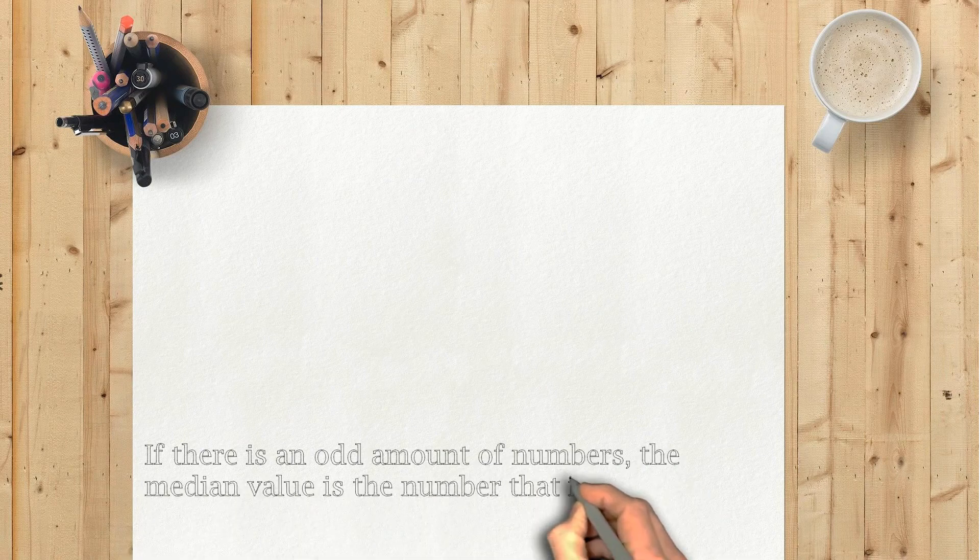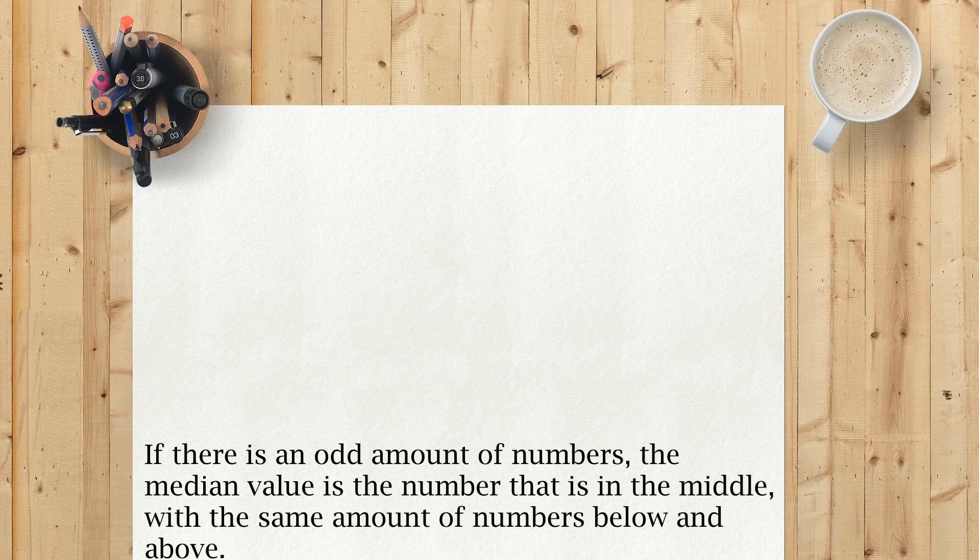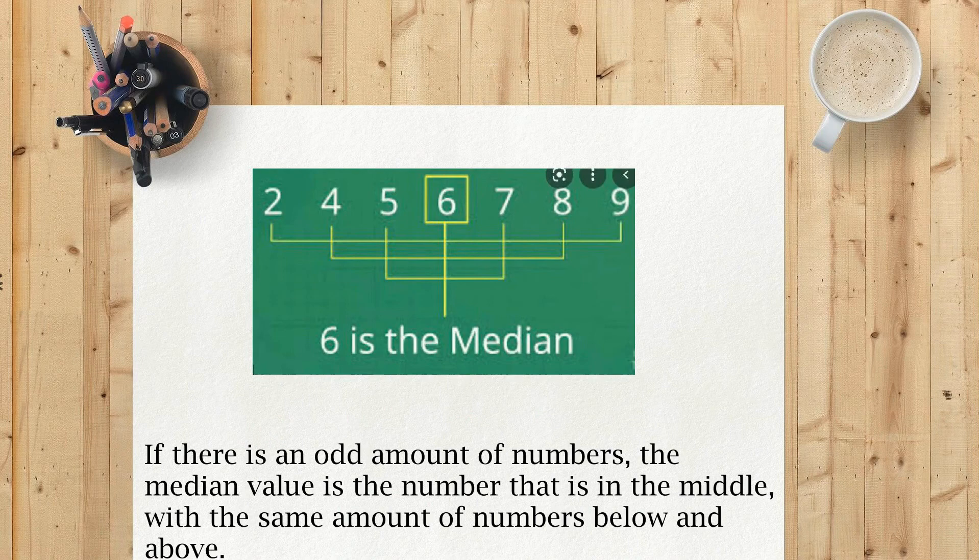If there is an odd amount of numbers, the median value is the number that is in the middle, with the same amount of numbers below and above.